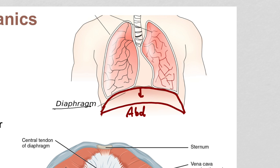The only option your lungs have is to go along for the ride. The diaphragm acts like a suction cup — it's not physically attached to the lungs, but when it goes down, the lungs go with it. The result is an increase in lung volume. This is different from the ventricles of the heart; the diaphragm is like a vacuum, and its volume goes up.